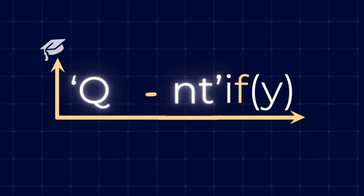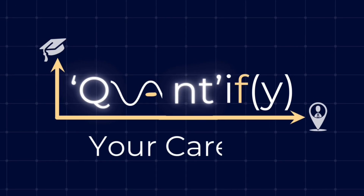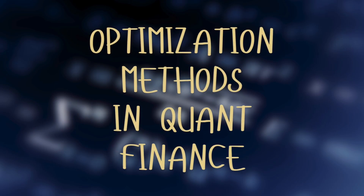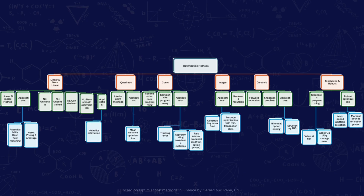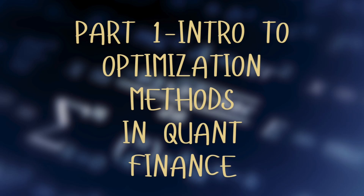Welcome back to Quantify Your Career. Today let's talk about the seven most important types of optimization methods used in quantitative finance. Let's keep it simple and explain everything in plain language — we'll get into details in later videos. This is an introduction to the different optimization types and their applications in finance.